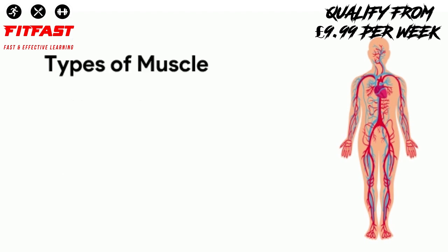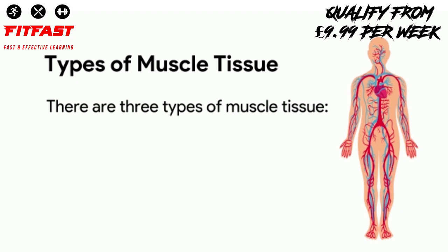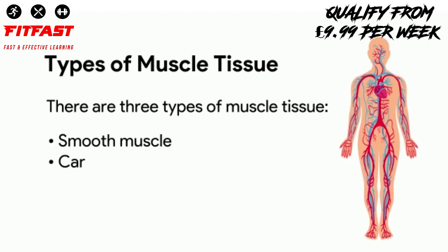Types of muscle tissue. There are three types of muscle tissue: smooth muscle, cardiac muscle, and skeletal muscle.